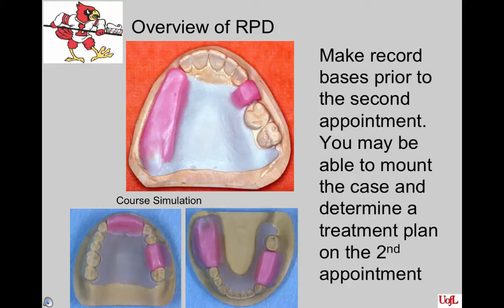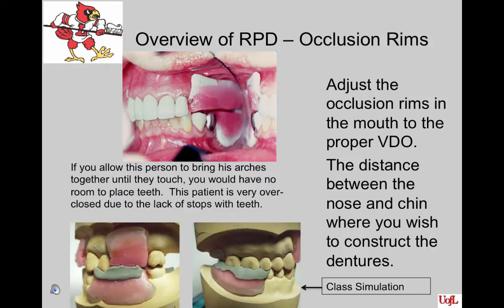At the time of impressions, it should have been determined whether to construct record bases and occlusion rims. If you cannot hand-articulate the two casts accurately, or they cannot be adequately supported by each other during the mounting procedure, then record bases and occlusion rims will be needed to mount the case. You are now ready to try in the occlusion rims and adjust them to the desired vertical dimension of occlusion. We don't necessarily want you to adjust them until the maxillary and mandibular teeth or arches touch — the patient may be very over-closed. We want you to determine the distance between the nose and the chin where you want to construct your dentures.